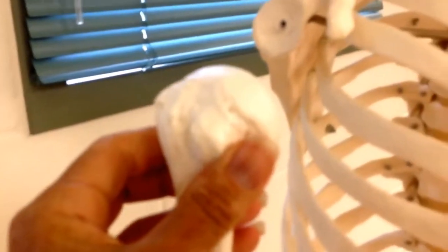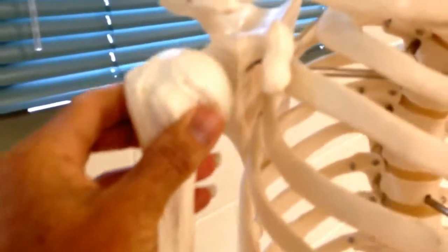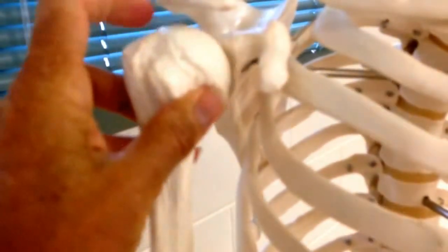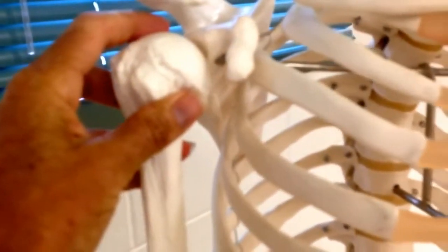So what I would advise is you look for the head and then you actually put it into your own shoulder or you go to the nearest skeleton and you put it in, and you'll be able to determine if you have the left or right. And as you can see we have the right.